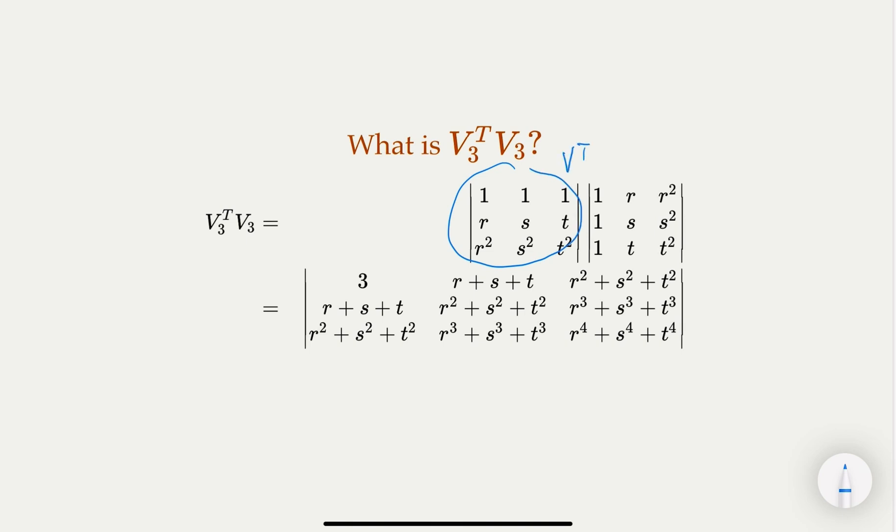This is V transpose and this is V. When you multiply together you get this matrix. Now the first row, first column will be 3, and first row second column will be r plus s plus t, and so on and so forth.